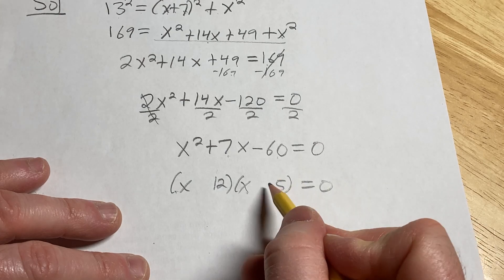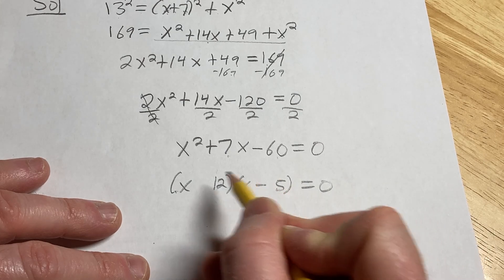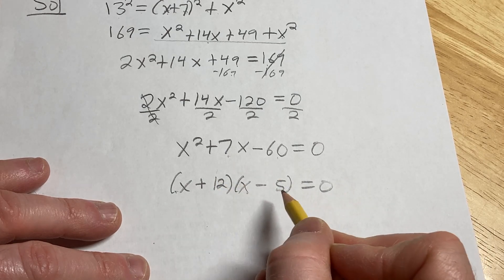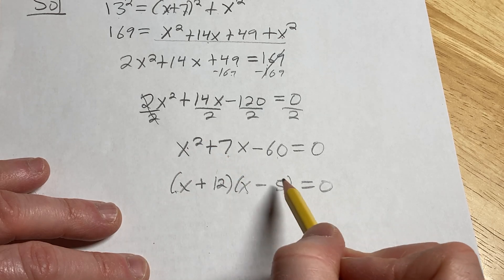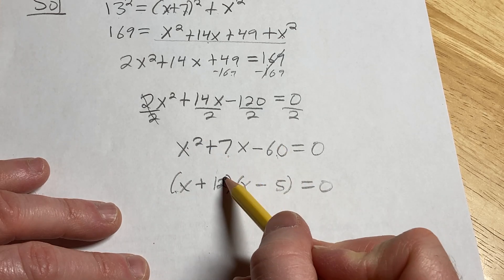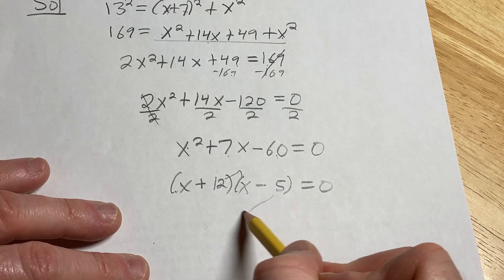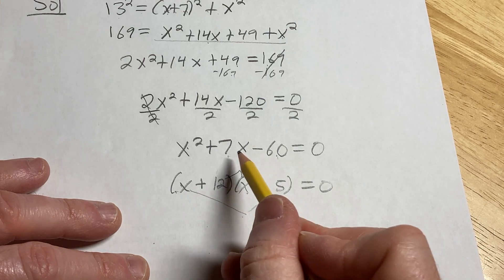12 times 5 is 60. Let's make the 5 negative and the 12 positive, and let's check. x times x is x squared. 12 times negative 5 is negative 60.